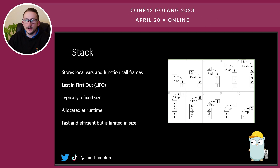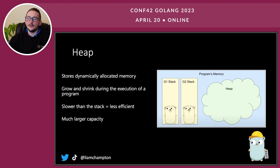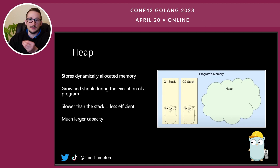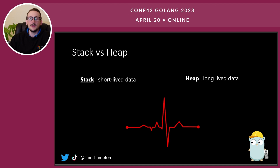Now let's look at a heap. Imagine it's like a cloud, and next to it we have two stacks. Heaps store dynamically allocated memory. They are not for quick allocation — they are there for longevity. These grow and shrink during the execution of a program, which makes it dynamic, but that also makes it really slow and less efficient. Anything that cannot be stored in a stack is typically put into the heap. Stacks are for short-lived data, and heaps are for long-lived data.